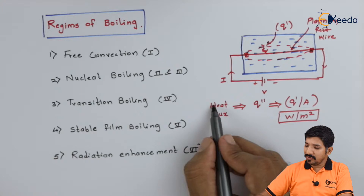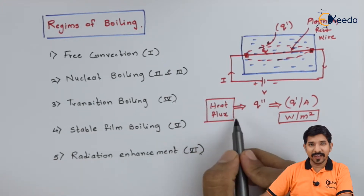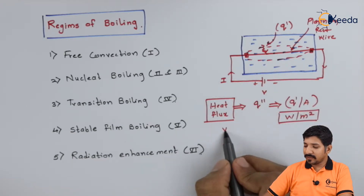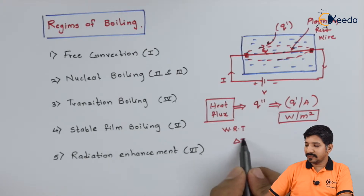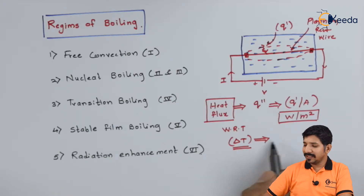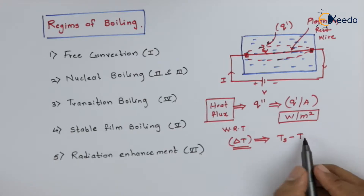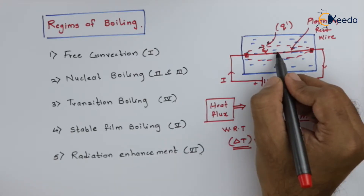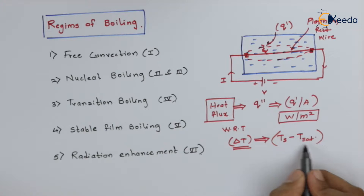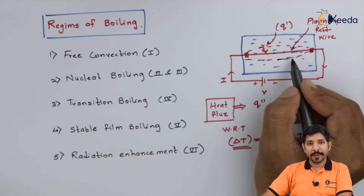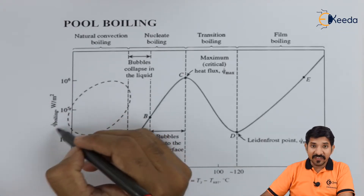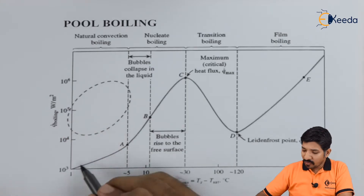What they have done is tried to find out the amount of heat flux going through the wire with respect to the change in temperature. The change in temperature is nothing but the surface temperature minus the saturation temperature, T_sat, which is the saturation temperature of the given fluid. By doing so, they observed the variation of heat flux with respect to temperature, and the profile looks something like this.